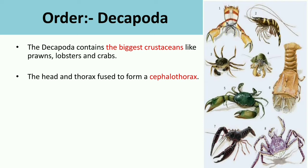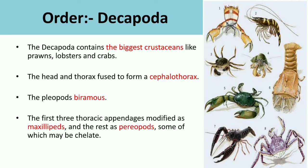In Decapoda, the pleopods are biramous, meaning two-branched, as discussed in our previous video. The first three thoracic appendages are modified as maxillipeds, and the rest are modified as pereiopods. Some may also have chelae.